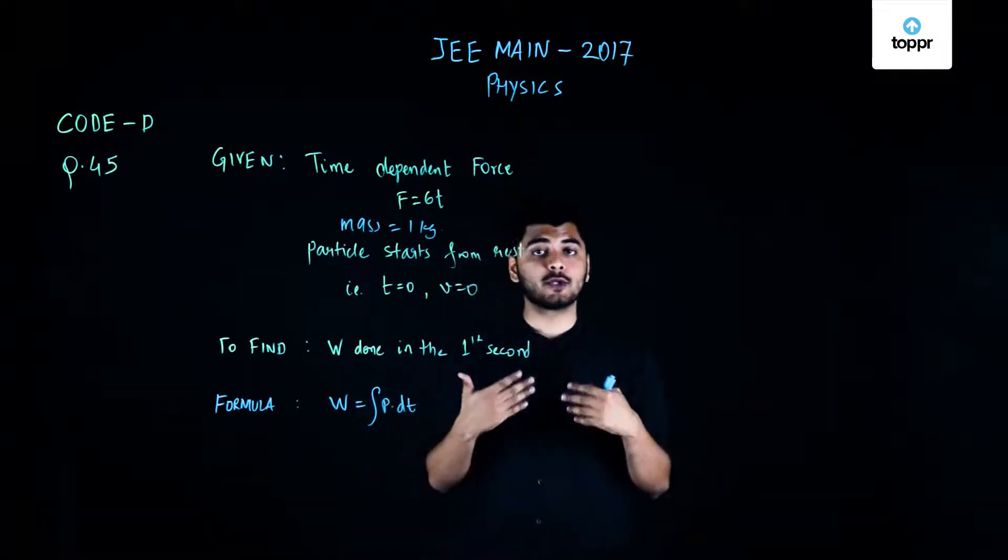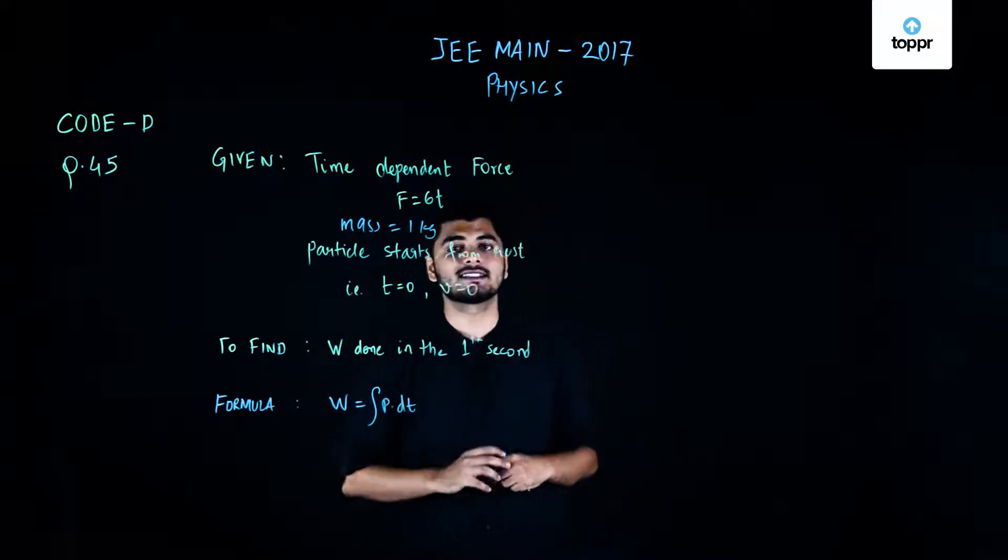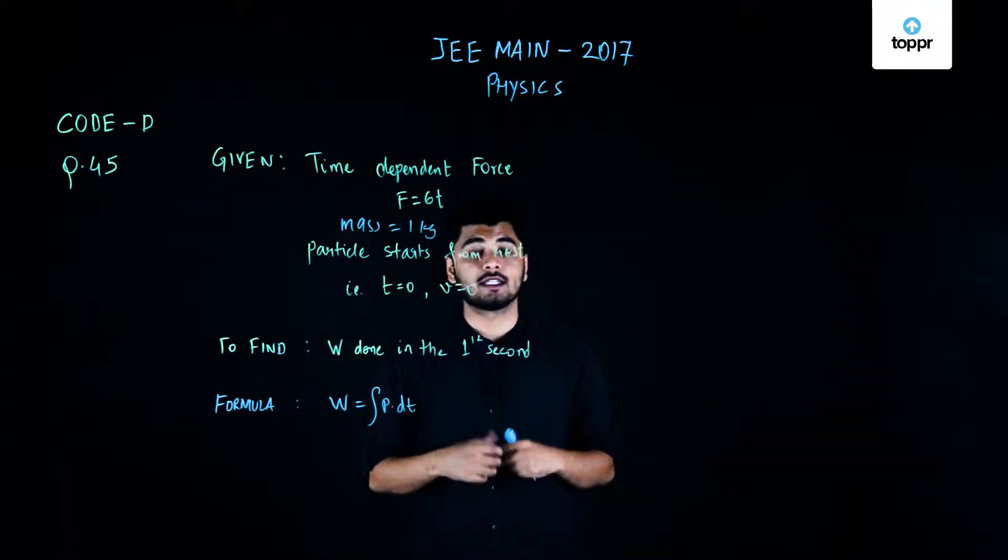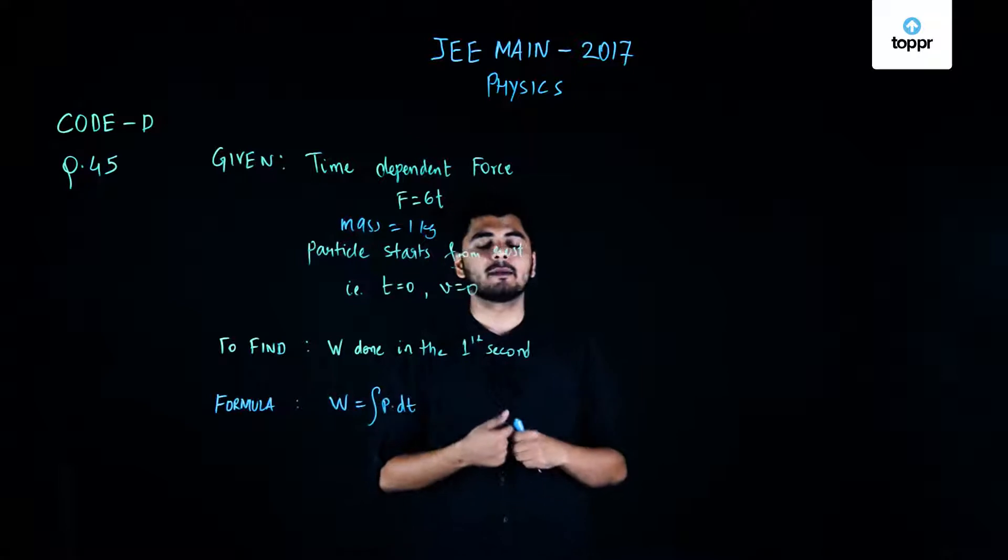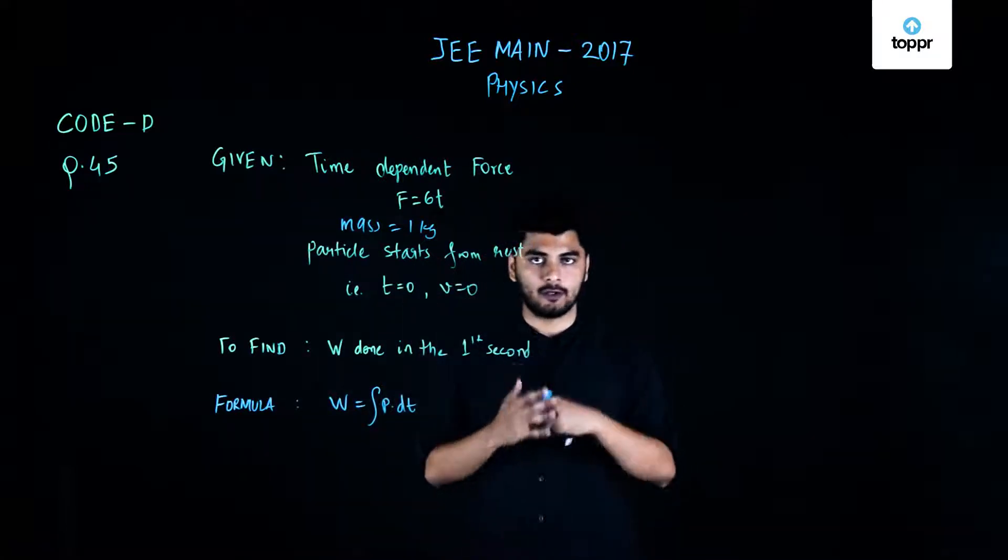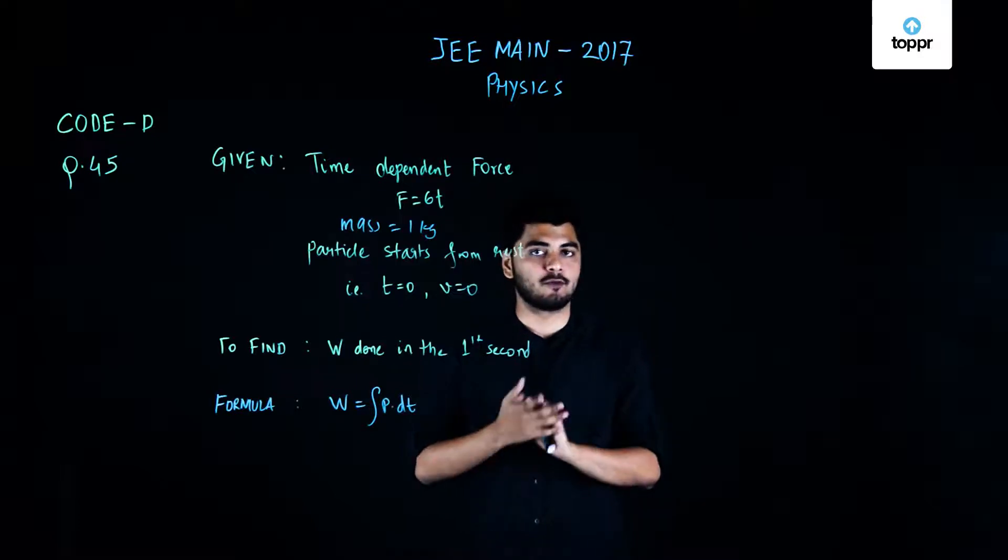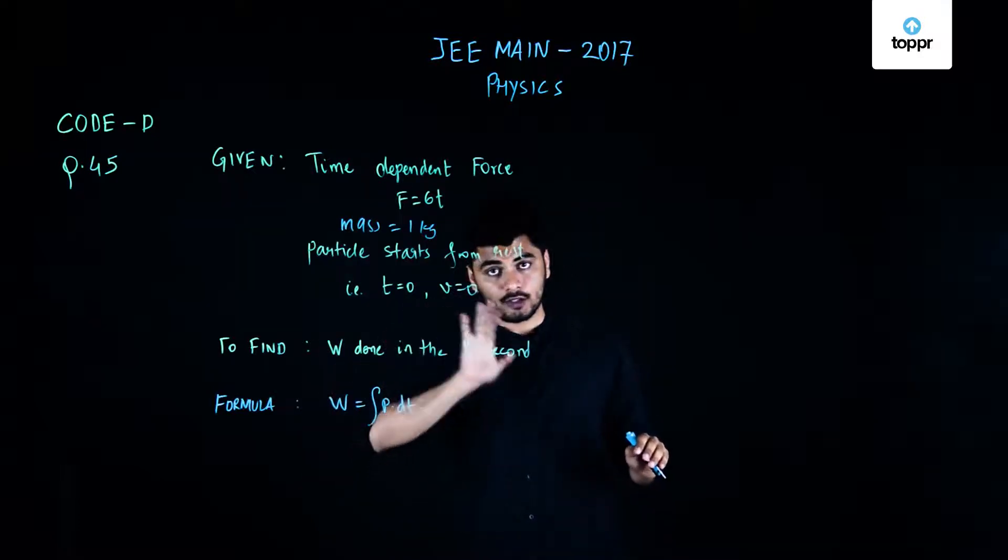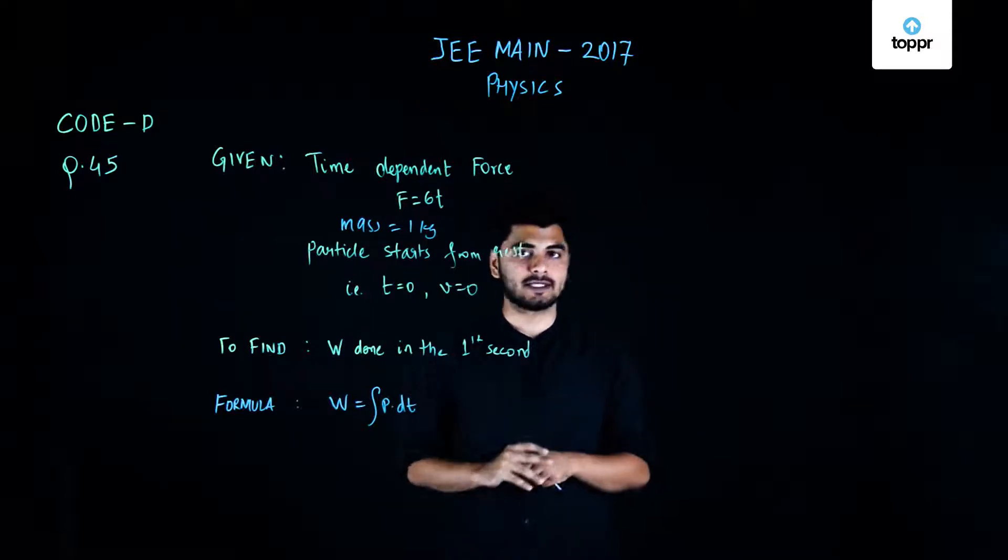So the formula or concept that I'm going to use here is that my work done is nothing but integral P dt. Now why am I using this integral? Because my force is not constant, implying that my acceleration wouldn't be constant, implying that my velocity wouldn't be constant. So in order to find the work done, we need to go by the integration method.